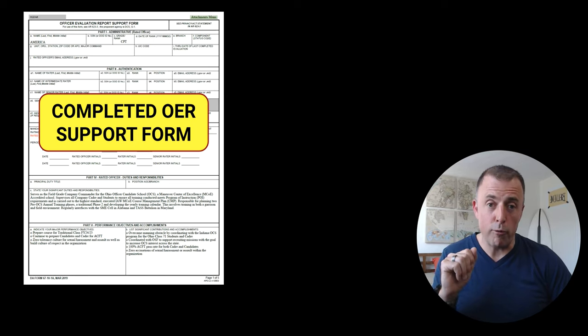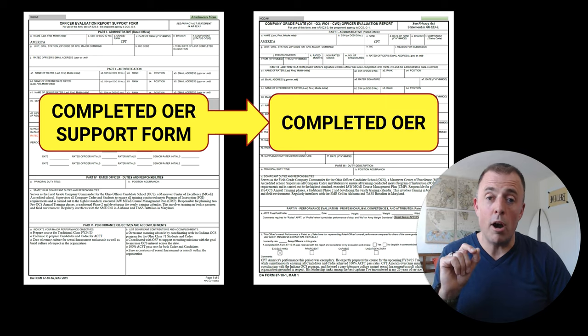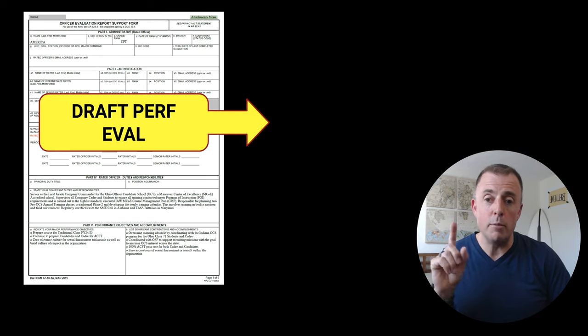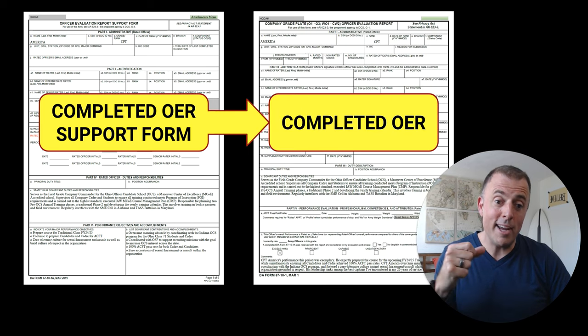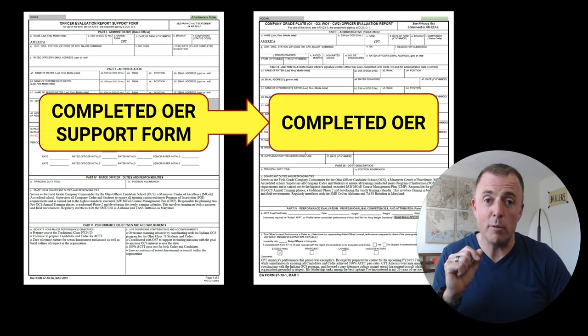So the completed OER support form — when an OER support form is that draft form the military officer completes and submits to their rater (supervisor) saying: these are the things I said I was going to do, and these are the things I did. Please complete my performance evaluation, which is called an OER, officer evaluation report. The draft performance evaluation is submitted by the employee; the supervisor completes the performance evaluation. In military terms it's called the OER support form, and that is used to generate the OER.